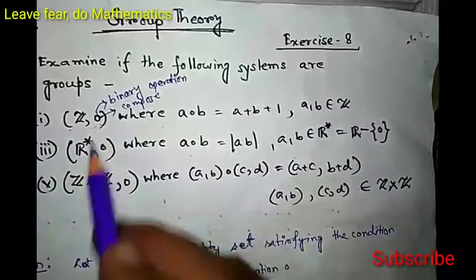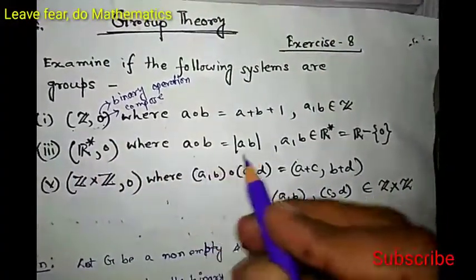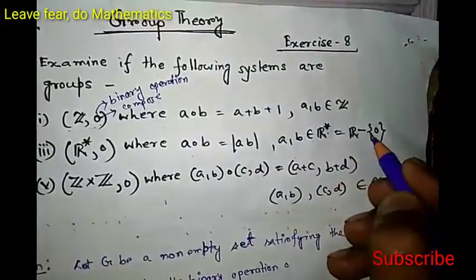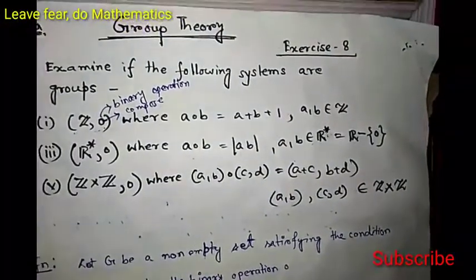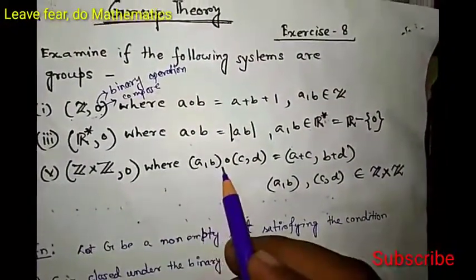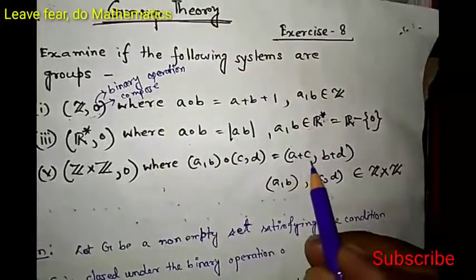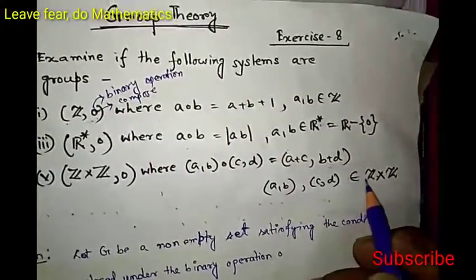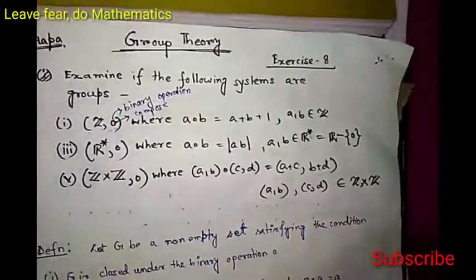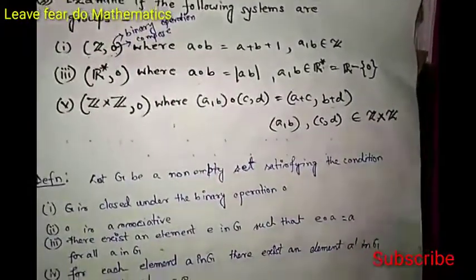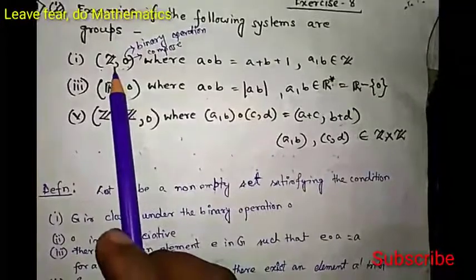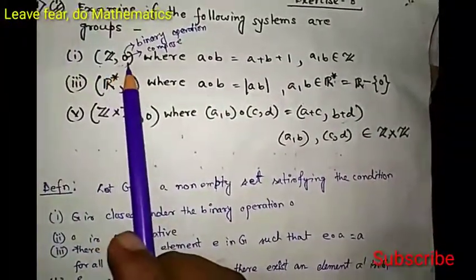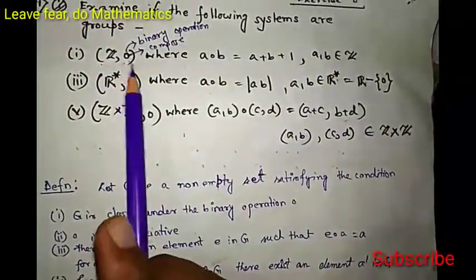Then we also have to check if (R*, ∘), where A ∘ B equals the modulus of AB with A, B belonging to R*, is a group. R* means R minus the singleton {0}. Similarly, (Z×Z, ∘), where (A,B) ∘ (C,D) is defined as (A+C, B+D), with (A,B) and (C,D) belonging to Z×Z. We have to check all three.